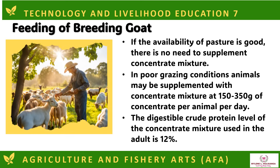Feeding of breeding goats: if the availability of pasture is good, there is no need to supplement concentrate mixture. In poor grazing conditions, animals may be supplemented with concentrate mixture at 150–350 grams of concentrate per animal per day. The digestible crude protein level of the concentrate mixture used for adults is 12%.